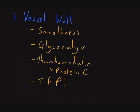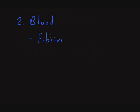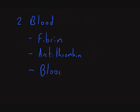The second broad category is linked to blood products itself. This includes fibrin itself, which has an important anticoagulant role, an important molecule called antithrombin, and the actual blood flow itself. I'll come to those in a minute.